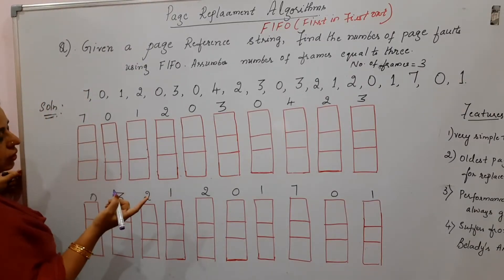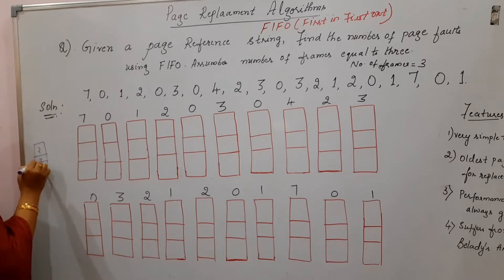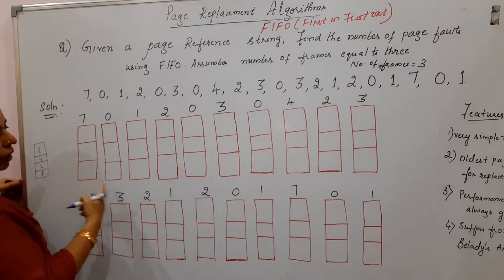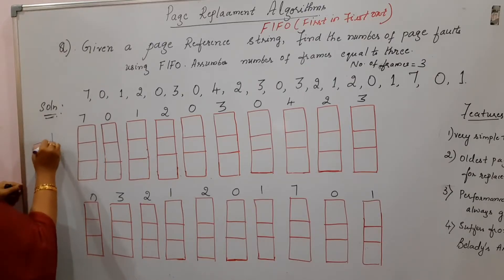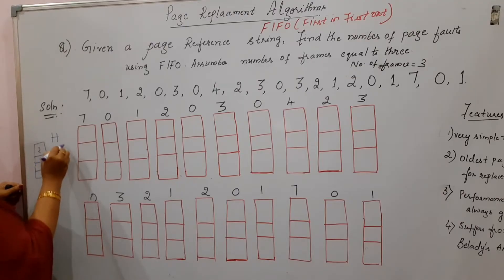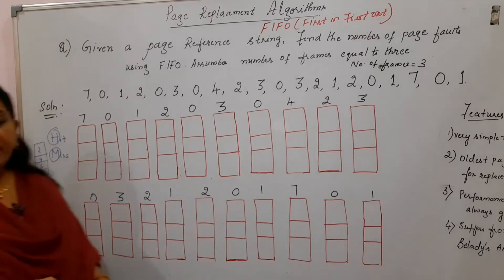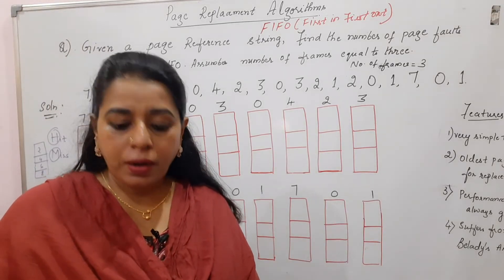What is being asked is the number of page faults. A page fault occurs when the CPU is looking for a page which is not present in the main memory. We will use two letters: if there is no page fault, we write H for hit; if there is a page fault, we write M for miss. Finally, the number of M's becomes the number of page faults for that particular problem.